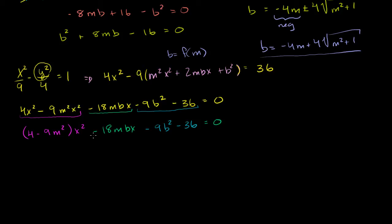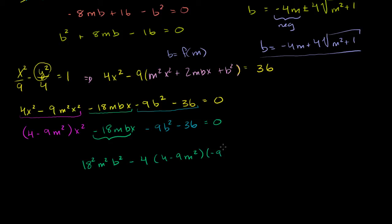So b squared — and remember, don't confuse the b squared in the quadratic formula with the b in the y-intercept — this term squared is going to be 18 squared m squared b squared, right? Negative 18 squared is just positive 18 squared. Minus 4 times a, where a is (4 minus 9m squared), times c. And c I can rewrite as negative 9 times (b squared plus 4). Check: negative 9 times b squared is negative 9b squared, negative 9 times 4 is negative 36 — correct. So taking the negative 9 and the negative 4 together, they become a positive 36.